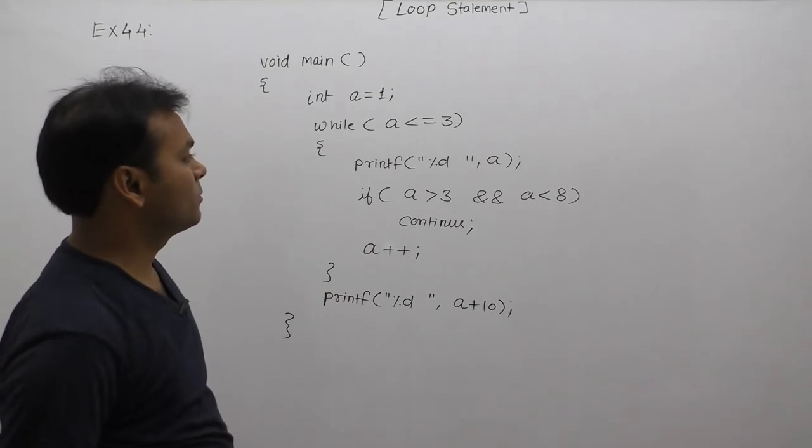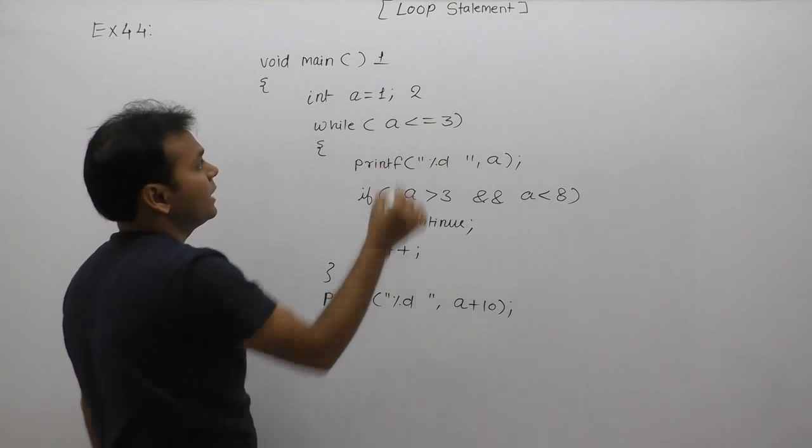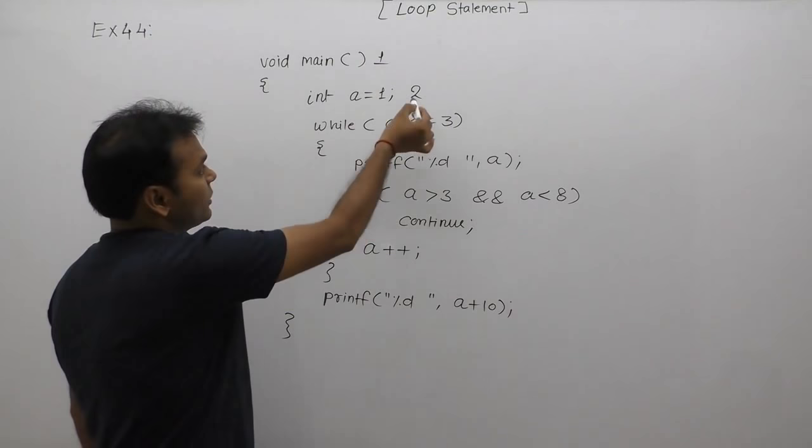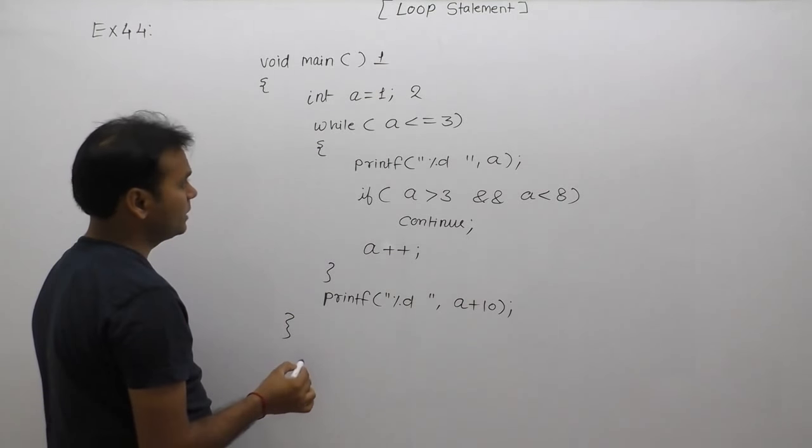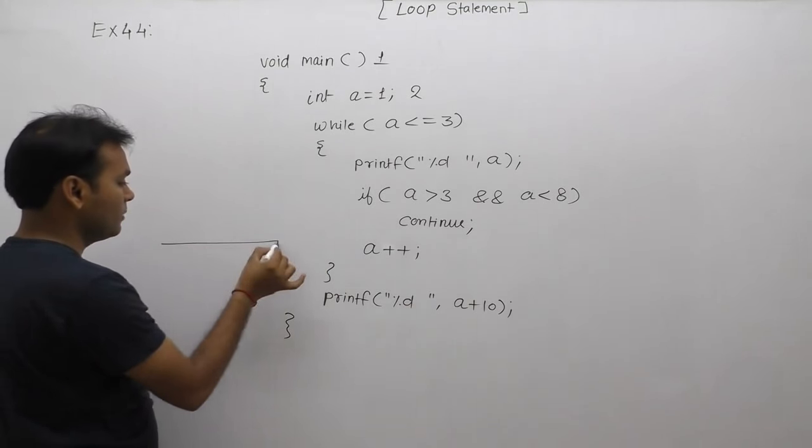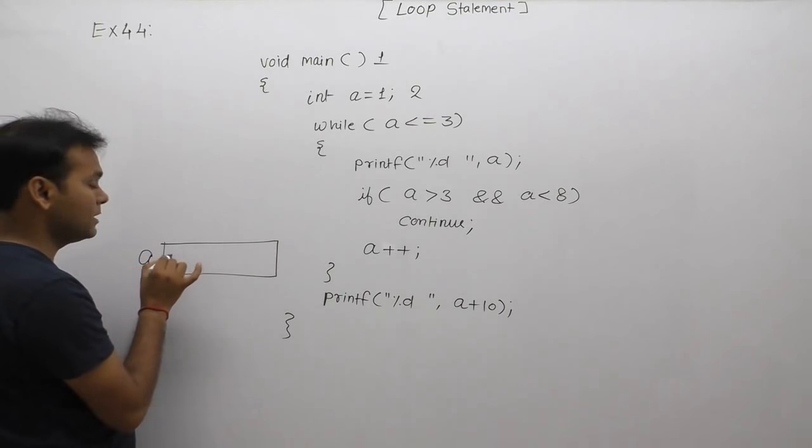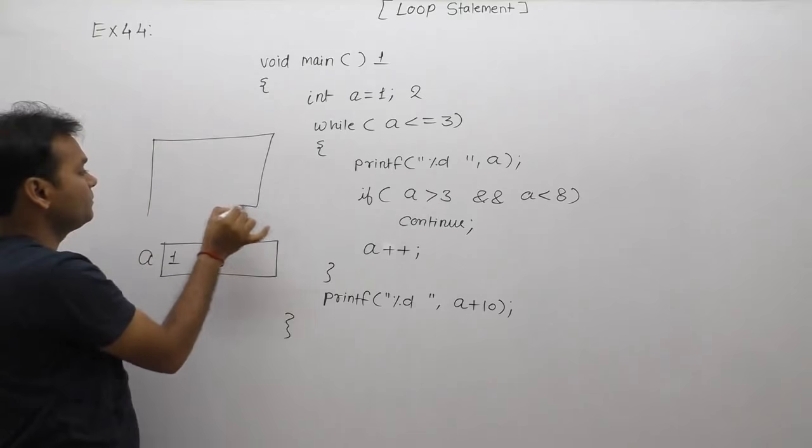What is the output of this code? Initially, we are starting from the beginning of the main function. According to statement 2, we are declaring variable a. This performs memory allocation for variable a. Variable a is created inside stack with the initial value as 1.